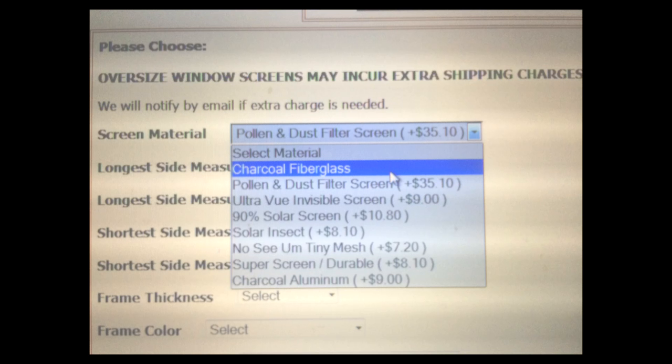The first thing we need to know is which type of screen mesh you would like in your window screens. While we have many specialty meshes to choose from including high visibility and solar screen, charcoal fiberglass is the basic mesh.